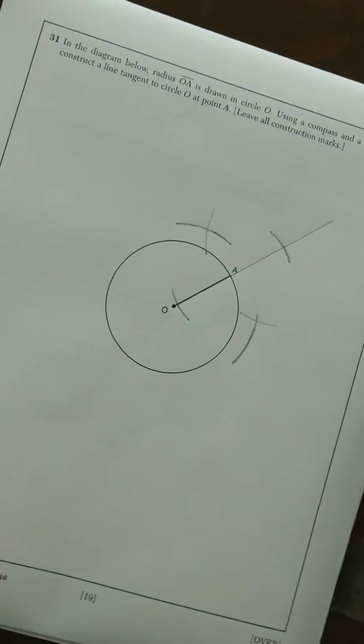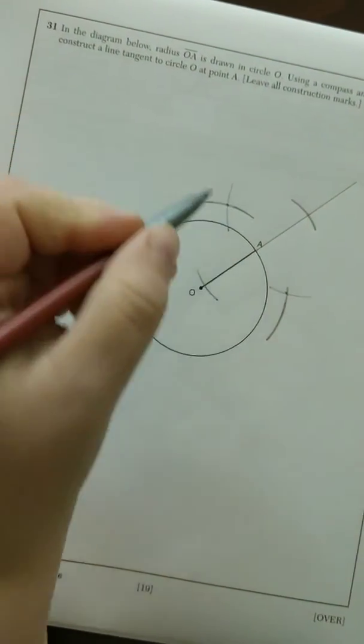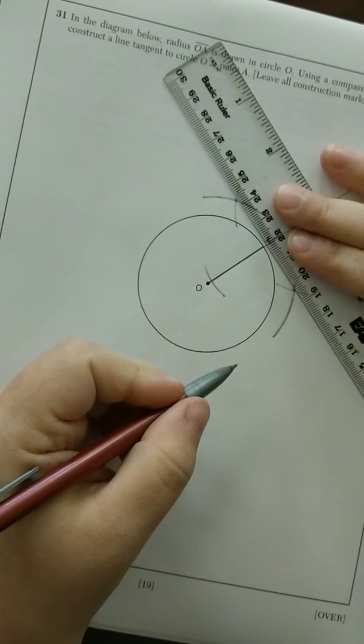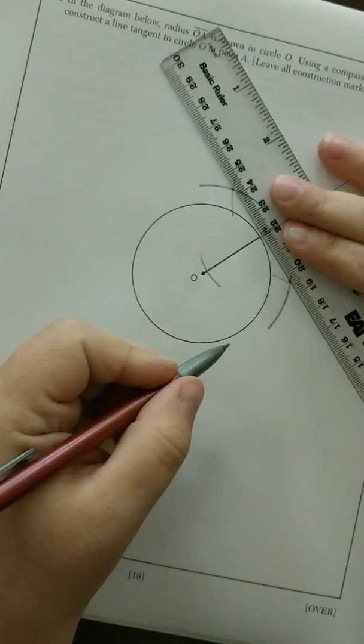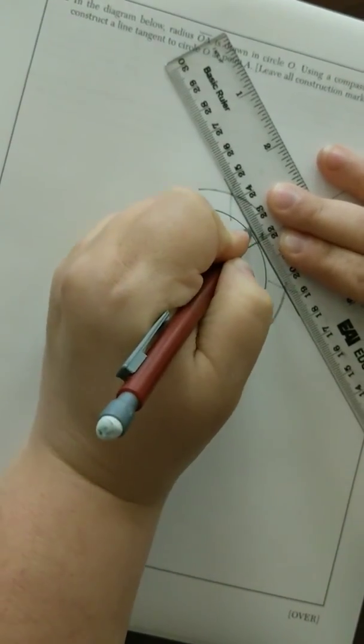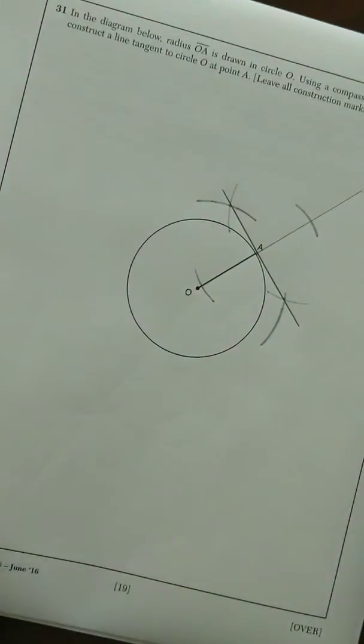From there, take your intersection points, use your ruler, line them up with A, and create the tangent line that hits the circle at one point.